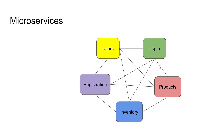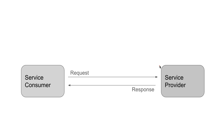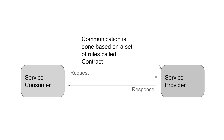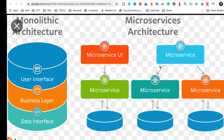Coming back to our service consumer and service provider architecture — the service consumer, for example a login service, and the service provider, for example a user service, communicate via a contract. The consumer creates the contract because the consumer knows exactly what it needs — what parameters and features it requires from the service. Therefore this is also called consumer-driven contract testing. The service provider then checks and verifies this contract, and based on its rules the communication takes place.